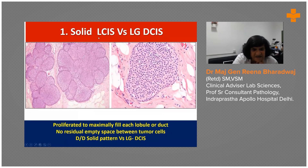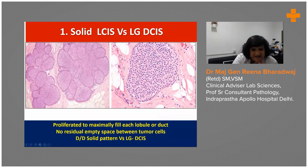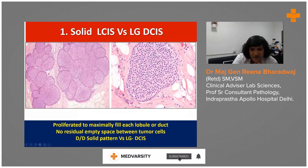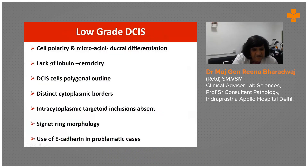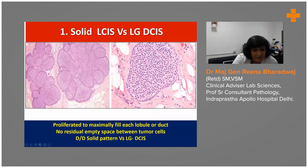The first mimic is solid LCIS. You can see clearly that the cells have proliferated maximally to fill the lobules. They are quite monomorphic and there are no residual spaces. If you wonder why this is not a low-grade DCIS, look at the cell polarity and look for micro-acini ductal differentiation. In this case, there is lobulocentricity.